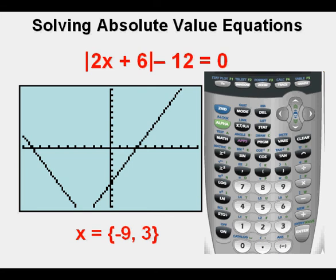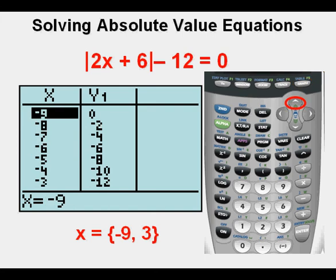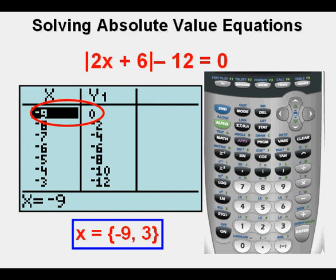We can check in our table view by pressing 2 then graph to get the table view. And we see that 3 is in fact one of the solutions because it's 3, 0. And we can see if negative 9 is also a solution. We scroll upward with the up arrow until we get to negative 9. And we see that negative 9 is also a solution proving our answers.